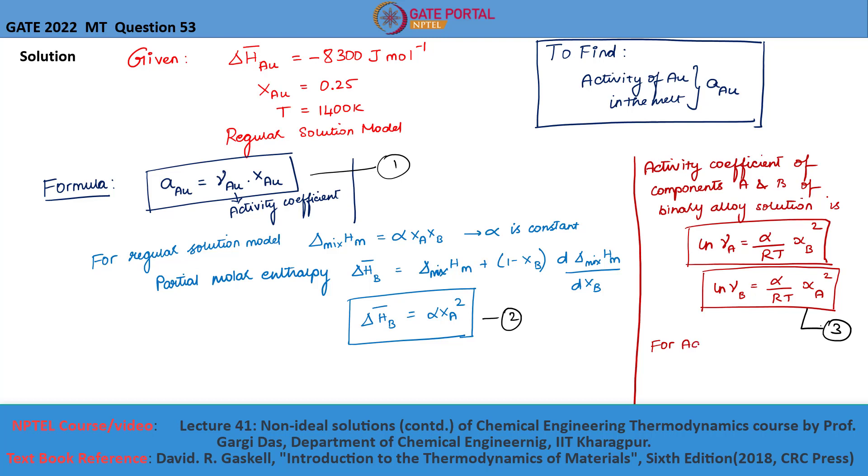Similarly, for silver-gold system, the activity coefficient is written as ln gamma_AU equals alpha by RT into X_AG square.